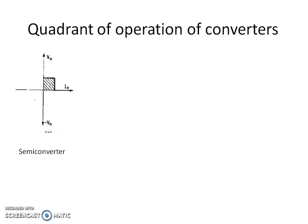We already studied about semi-converter and full converter. A semi-converter consists of two thyristors and two diodes, with partial control over the output voltage. We can control only two control switches present in the semi-converter. Therefore, the output voltage is always positive and the output current is also always positive. With the help of a semi-converter, we can obtain only first quadrant of operation.